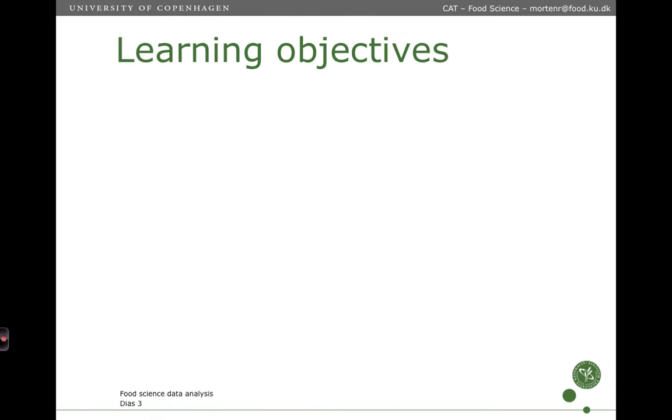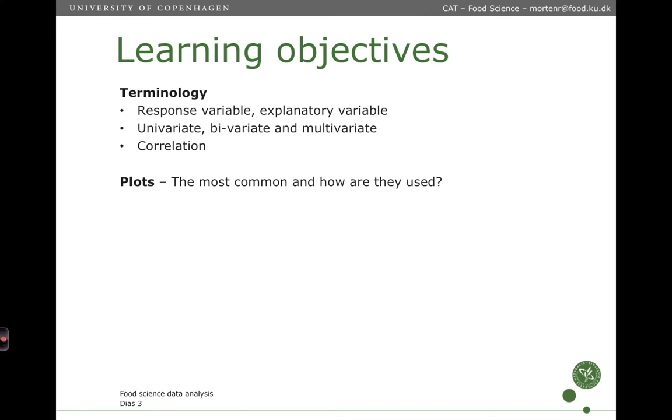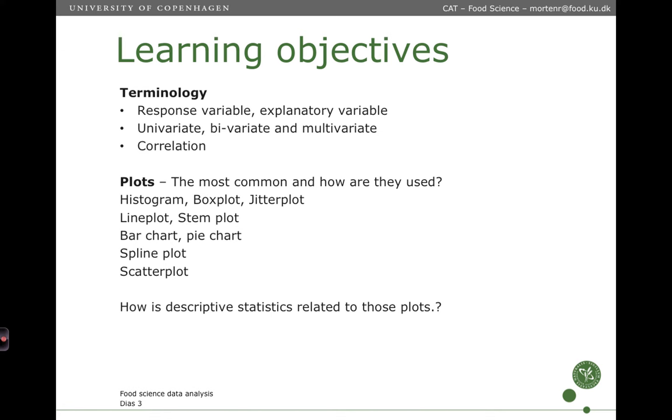The learning objectives of this video lecture is that you should know a little bit about the terminology of the data that we have. So what is a response variable? What is an explanatory variable? What is univariate, bivariate and multivariate data? What is correlation? And the plots that we are going to go through are the most common ones and how they are used. That is histograms, boxplot and jitterplots, lineplots, stemplots, barcharts, piecharts, splineplots and scatterplots. And how is descriptive statistics related to those plots?